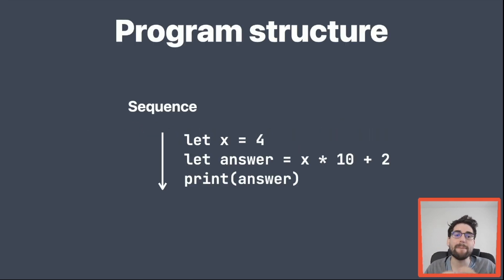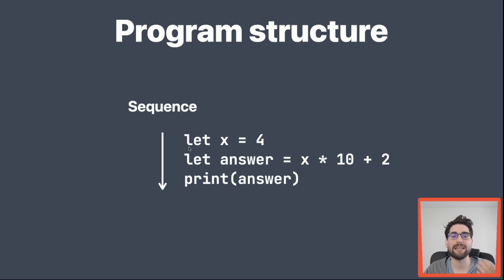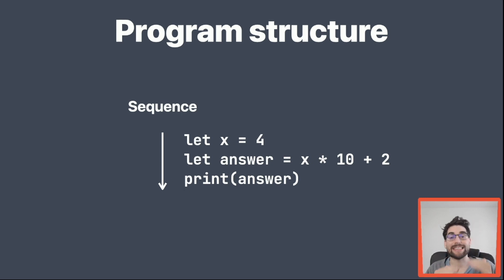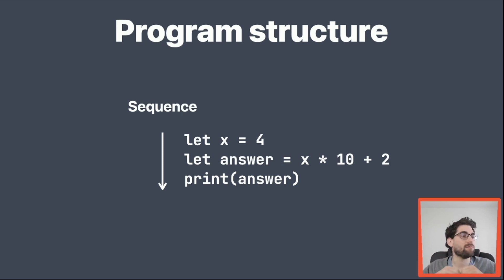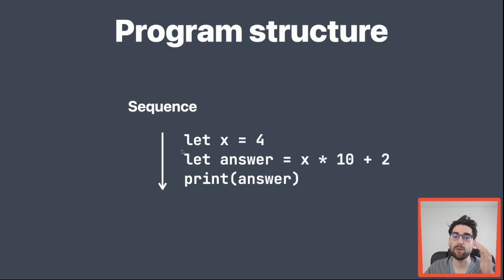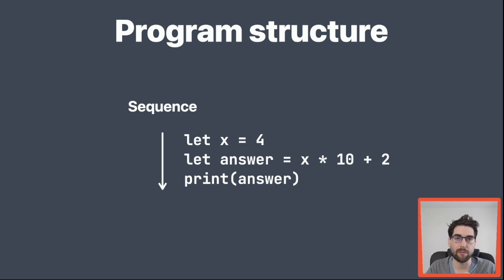Usually the basic program structure is just a sequence. It starts at the top and just keeps going downwards until it reaches the bottom and exits. There is a start and there is an end, and everything that happens in between — a lot of things can happen — but there is always a start at the top and you go downwards until the end. Remember this, because that makes it very easy to reason about what's going on in our program.